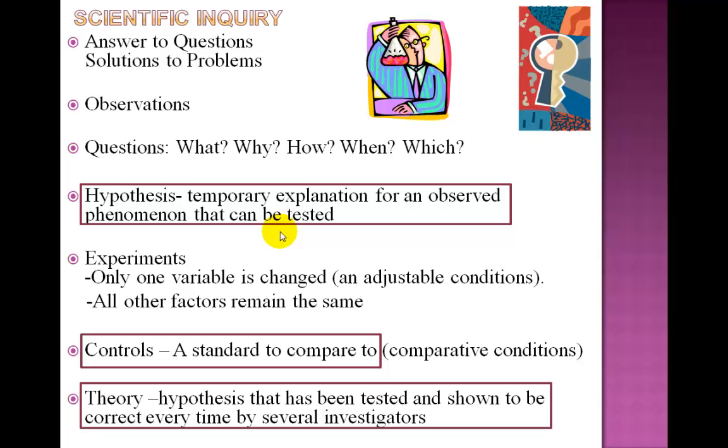Experiments that are set up to answer those questions and to test the hypothesis are then formulated. In the experiment, only one variable is changed and all the other factors remain the same. In Pasteur's experiment 1, for example, the flasks were either opened or sealed. In both the control and experimental tubes, similar flasks were used. The broth in both flasks was the same and the two flasks were both heated for the same length of time.